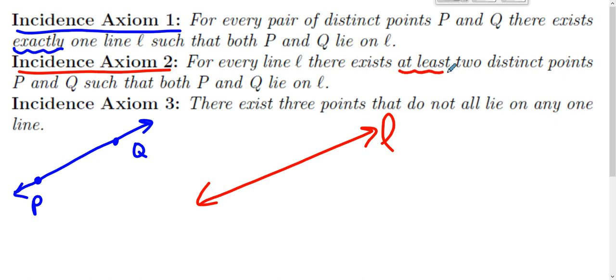This rule says there are at least two. Maybe that's all there are. Maybe there are no other points on the line, but there are at least two. There can't be just one point on a line.